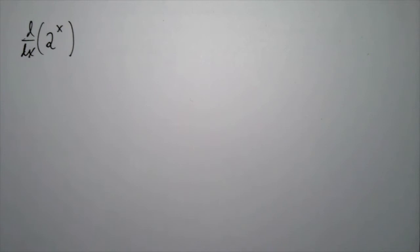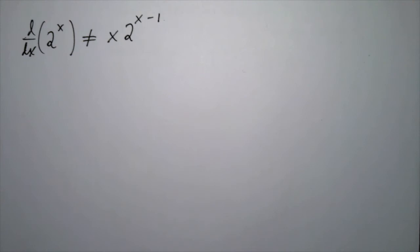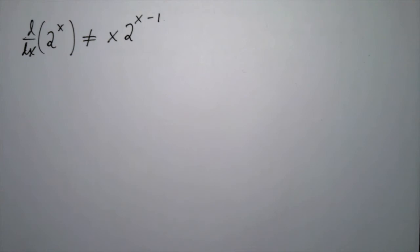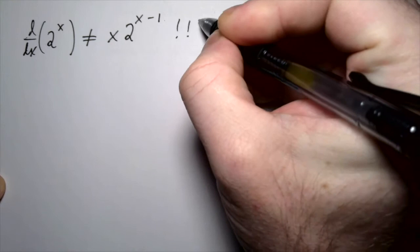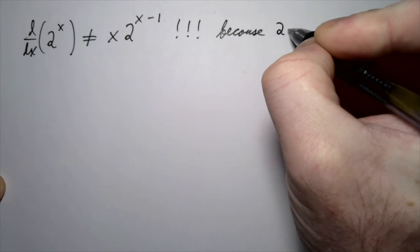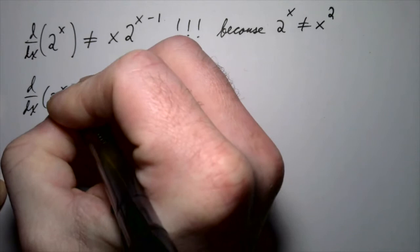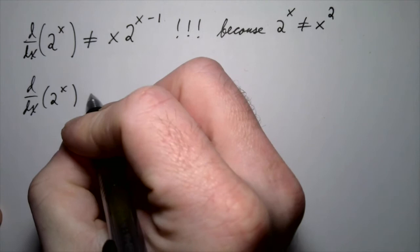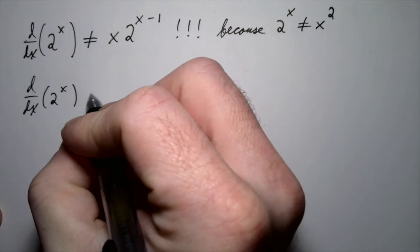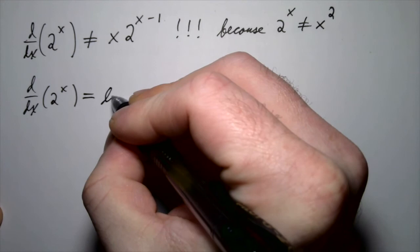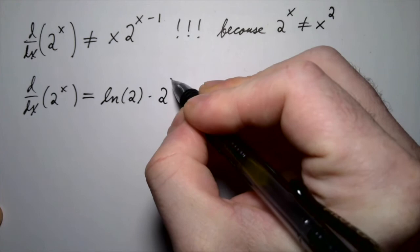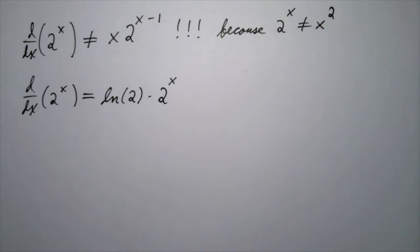Let's compute the derivative of 2 to the x. First of all, this is NOT equal to x times 2 to the x minus one — that's what we'd get if we blindly applied the power rule, bringing the exponent down. That does not make sense; 2 to the x is different from x squared. To apply the power rule, x has to be in the base. Instead, we use the rule for derivatives of exponential functions with general base: the derivative is the natural log of 2 times 2 to the x.